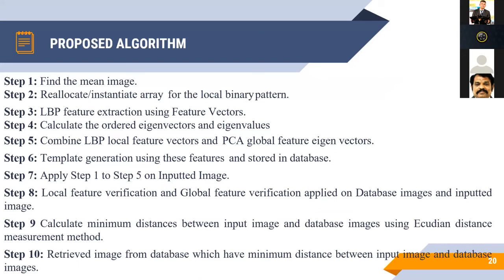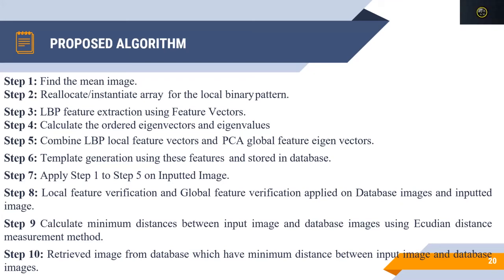In our proposed method, we combine both LBP and PCA. The pipeline is: capture the image, convert to grayscale, apply LBP to extract local features, apply PCA to compute eigenvectors and eigenvalues, then store the result in the database. When a new fingerprint is presented — for attendance or presence — the same algorithm runs, calculates the local decimal value via LBP, considers the shape via PCA, matches against the database, and finds the best match from potentially 1500 images.